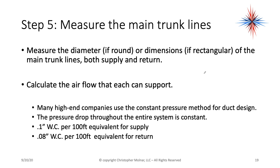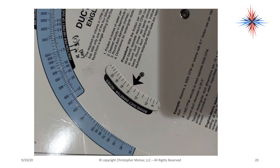Many high-end companies use the constant pressure method for duct design — the pressure drop is equivalent through the entire system. Most of us use 0.1 inches water column per 100 feet for the supply, and 0.08 inch water column per 100 feet equivalent for the return. Be careful — this is not 100 feet of actual duct work. It's the equivalent, taking into account items like 90-degree elbows. A 90-degree elbow could equal 25 feet of duct work. We use lower friction loss for return because of filter efficiency.